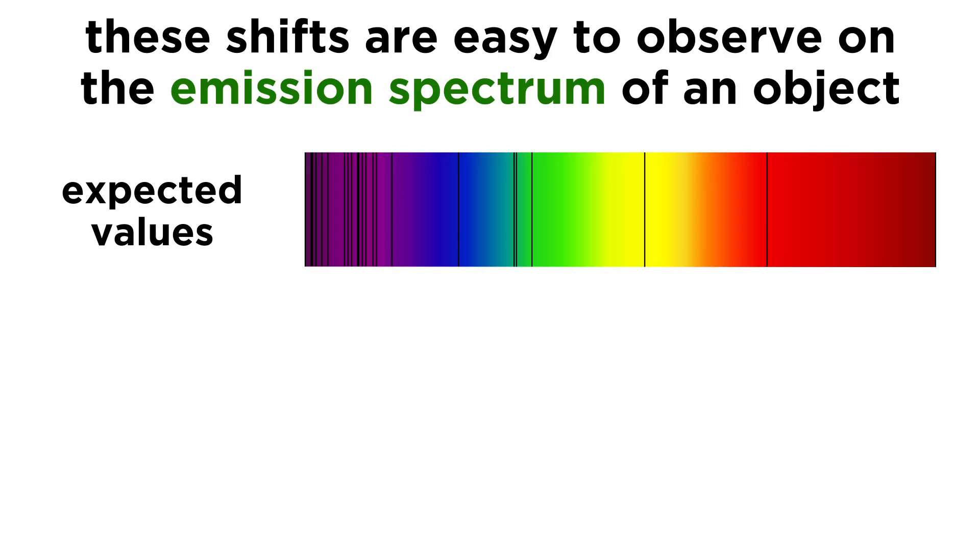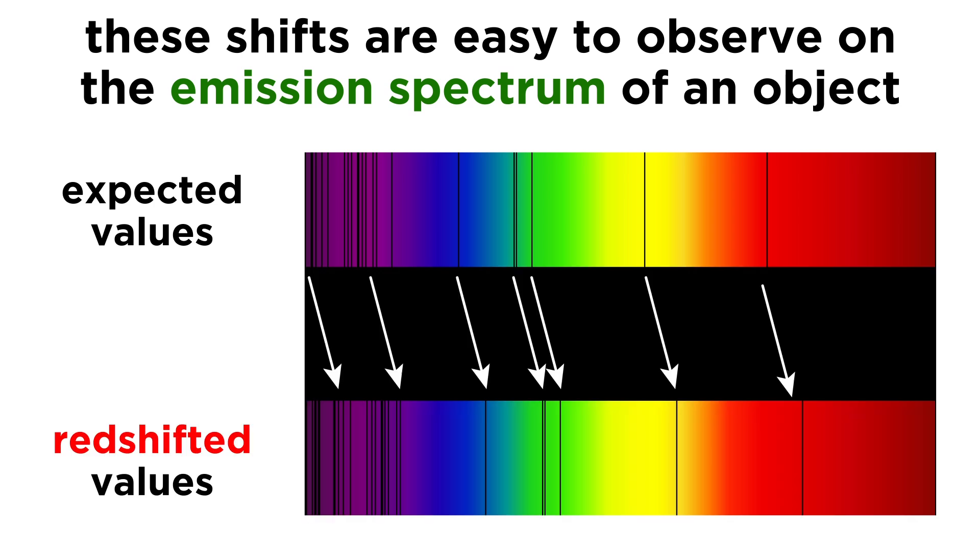These shifts are easy to observe on an emission spectrum, because we know where the emission lines for hydrogen and other elements ought to be. If an object gives emission lines that are shifted from these values, it's a very clear indication of the motion of that object.